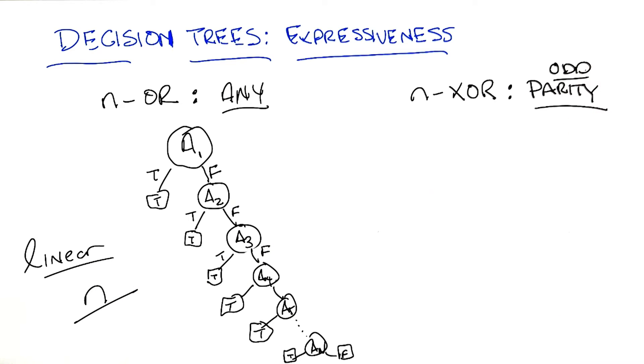And all that works out to be, in this case, is if the number of attributes that are true is an odd number, then the output of the function is true. Otherwise, it's false. Got it? So, how would we make that decision tree work?